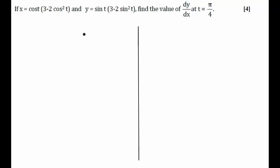This is a very straightforward question. We are given a value of x and a value of y. Using these values, we have to calculate what is dy/dx at t equal to π/4. The only thing in this question is that the value of x is given in terms of t, and the value of y is also given in terms of t.